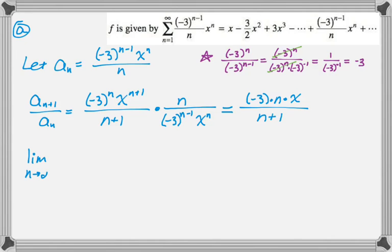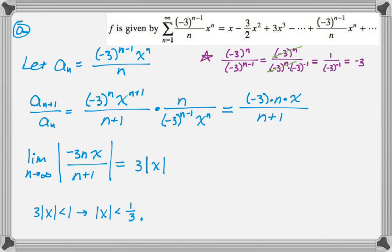And now I need to take the limit as n goes to infinity of the absolute value of that thing. So n over n+1 goes to 1, the absolute value of -3 is 3, and then the absolute value of x is the absolute value of x. So the series will converge every time this limit is less than 1. So 3 times the absolute value of x is less than 1, which means the absolute value of x is less than 1/3. So r, what I need to find, is 1/3. So that's not really all that bad.